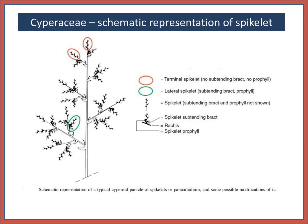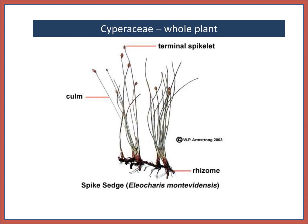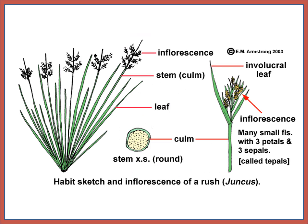Now Cyperaceae. You can observe here the schematic presentation of the spikelet, showing terminal spikelet and lateral spikelet. This is the Cyperaceae flower. You can observe the involucral leaf and inflorescence clusters of the spikelet. Bracts are spirally imbricated; stem is triangular with an involucral leaf. You can observe the terminal spikelet, rhizome, and spike of the sedges — here you can observe the habit sketch and inflorescence of a sedge.